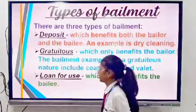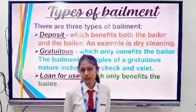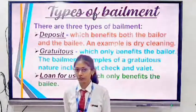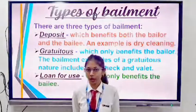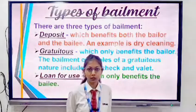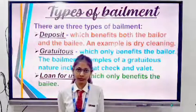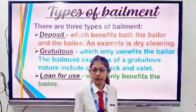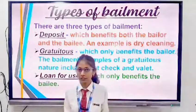Basically there are three types of bailment. The first one is deposit, which benefits both the bailer and the bailee. For example, there are two friends A and B. A requires a car for a few days but cannot afford one, while B is going out of station and wants to keep his car in safe hands. B hands over his car to A — A gets to use the car, and B's car stays in safe hands.